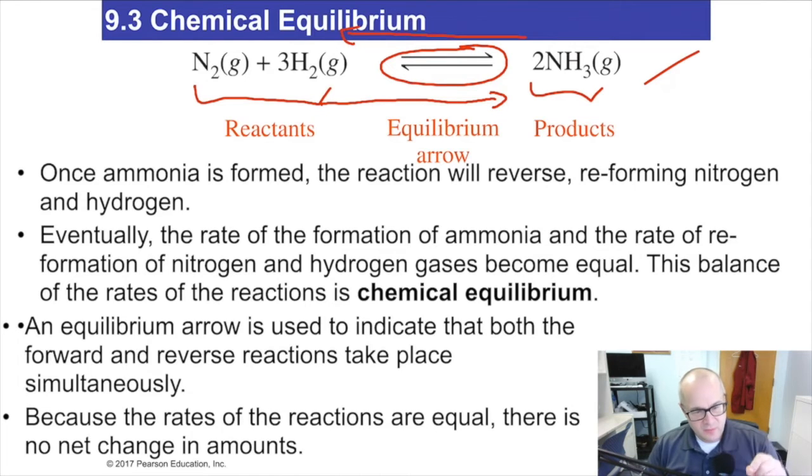At equilibrium, concentrations on the left and on the right don't change. At equilibrium, concentrations on the left and concentrations on the right of the equilibrium arrow do not change. The rates are equal. The rates of product formation and starting material formation are the same. That's equilibrium. It's a very difficult concept, but that's, in a nutshell, what it is.